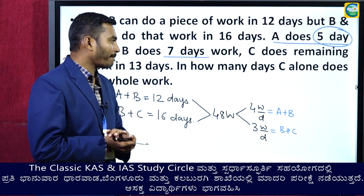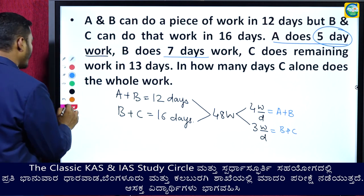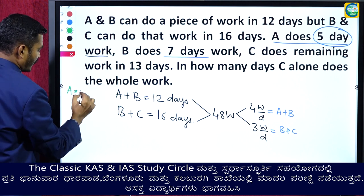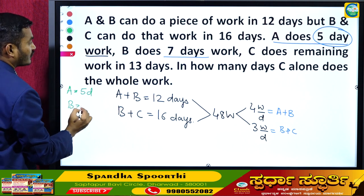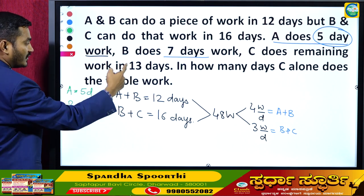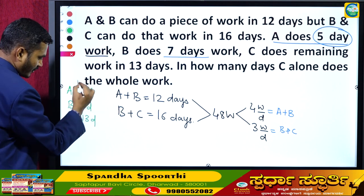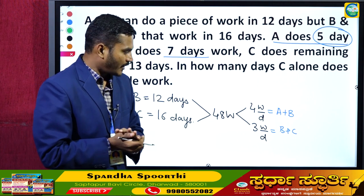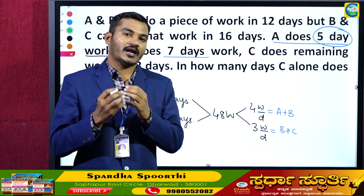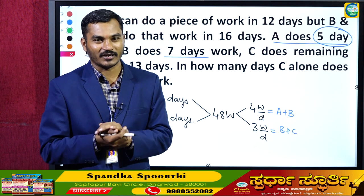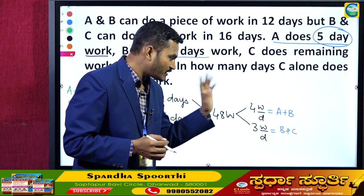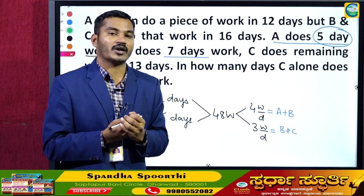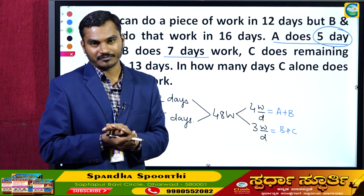Now, A works for 5 days, B works for 7 days, and C works for 13 days, and in those days the total work is completed. However, from only this given information, can we find the individual efficiencies of A, B, and C? It is not possible, because there are three unknowns but only two equations.